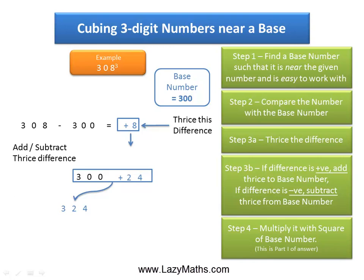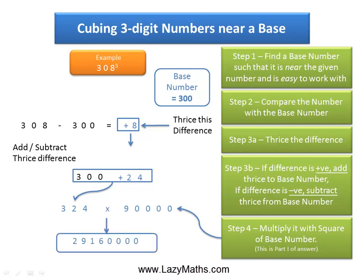The last step to get part one of the answer is to multiply 324 by the square of the base number. The base number is 300, so the square of the base is 90,000. Therefore, 324 multiplied by 90,000 gives us 29,160,000, and this becomes part one of the answer.